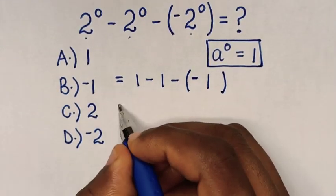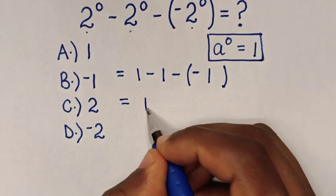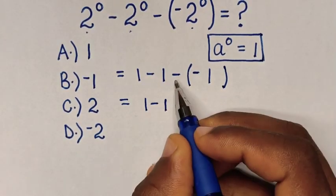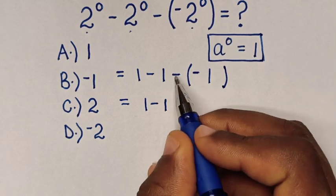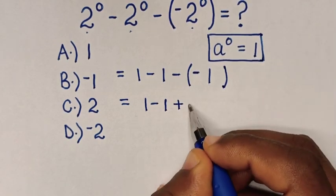Then, in the next step, it will be equal to 1 - 1, then we open this bracket, so negative and negative, it will be positive, positive 1.